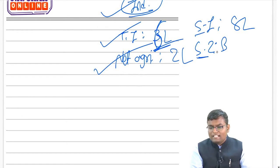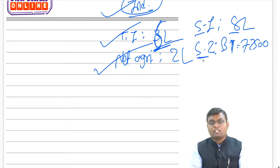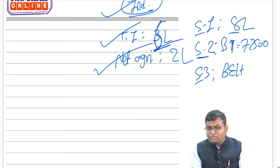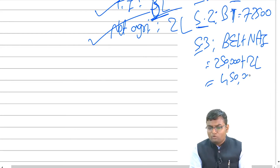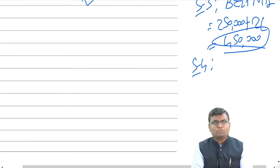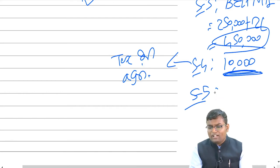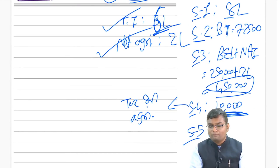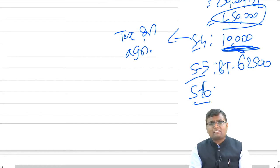Step 2: calculate basic tax on ₹8 lakh — up to ₹5 lakh it is ₹12,500; above that, on ₹3 lakh at 20%, so total basic tax is ₹72,500. Step 3: basic exemption limit plus net agricultural income = ₹2,50,000 + ₹2,00,000 = ₹4,50,000. Step 4: basic tax on ₹4,50,000 — up to ₹2.5 lakh no tax; above that, ₹2 lakh at 5% = ₹10,000. This represents the tax on agricultural income which the government cannot collect. Step 5: final basic tax = step 2 minus step 4 = ₹72,500 − ₹10,000 = ₹62,500. Then add surcharge, deduct rebate as applicable.